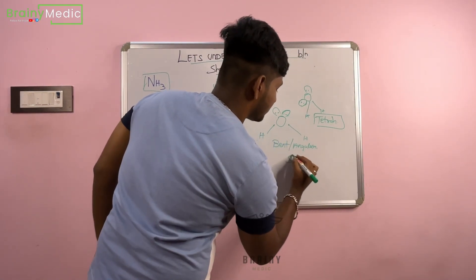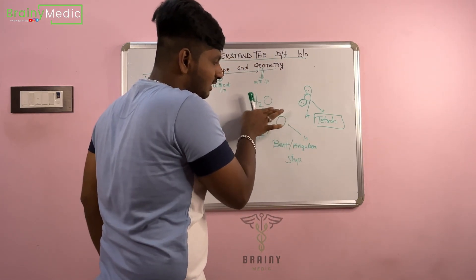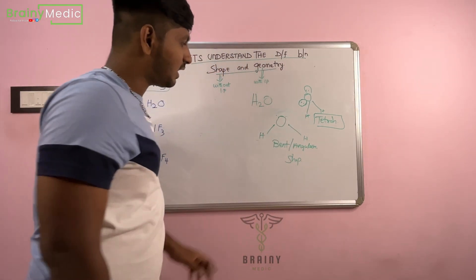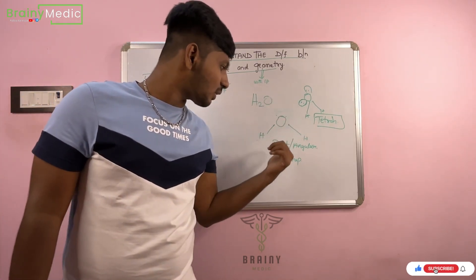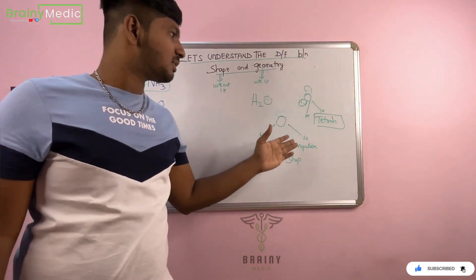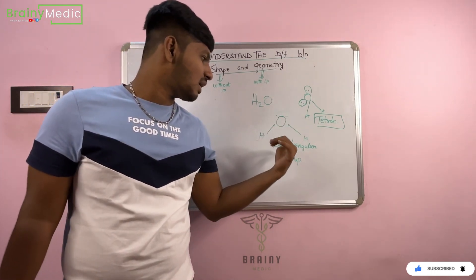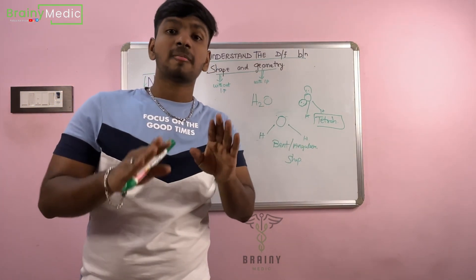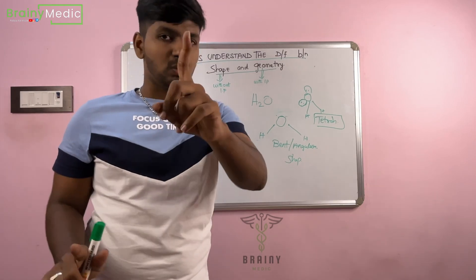But the shape — you know the angle here. The shape is bent or angular. There are two names: bent or angular. This is the shape of H2O — angular or bent.